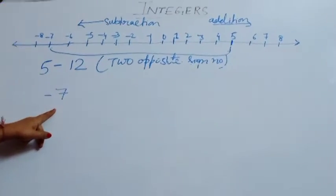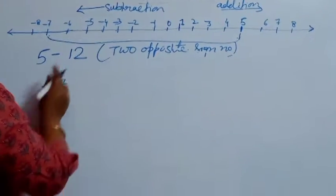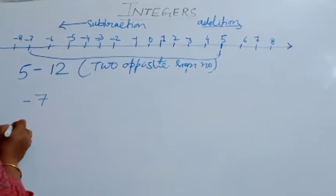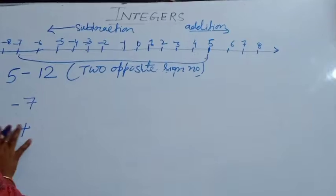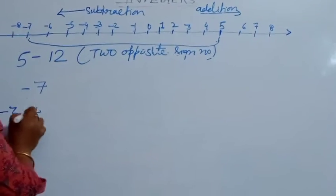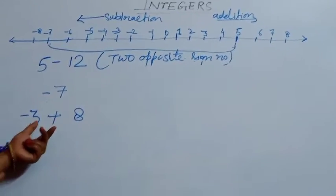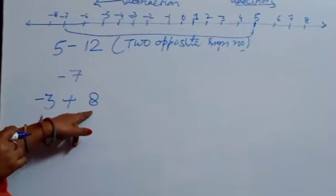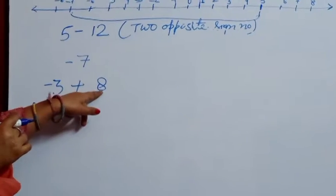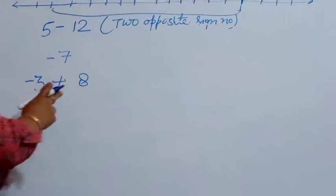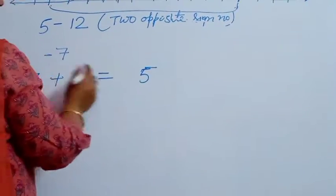This is our result. Again, one more question I am doing with this number line. The question is minus 3 plus 8. Minus 3 plus 8 — they have two opposite signs. Two opposite sign numbers are always subtracted, so 8 minus 3 will be 5, and with the greater number's sign, the answer is plus 5.